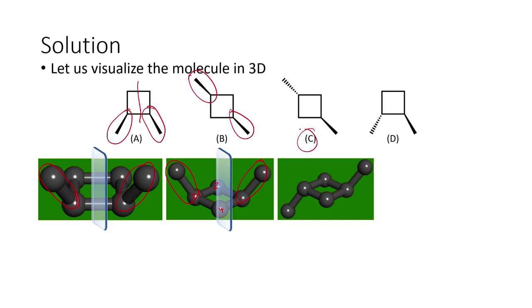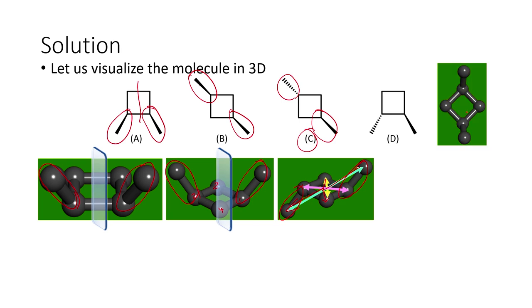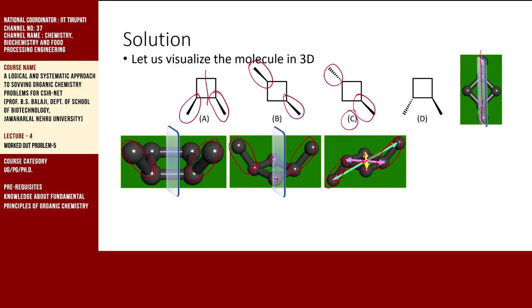In the third compound, one methyl is pointing towards the observer and the other is pointing away from the observer — one up and one down. Looking at this molecule, there is an additional symmetry element: we can see the center of symmetry present. There is no plane of symmetry in this orientation, but if we rotate the molecule 90 degrees we can see there is also a plane of symmetry. This molecule has both a plane of symmetry and a center of symmetry, so it is also optically inactive.